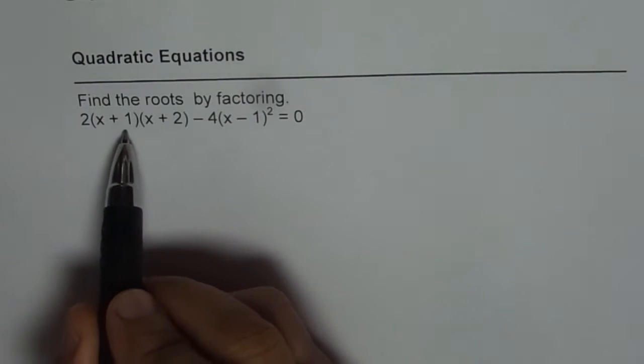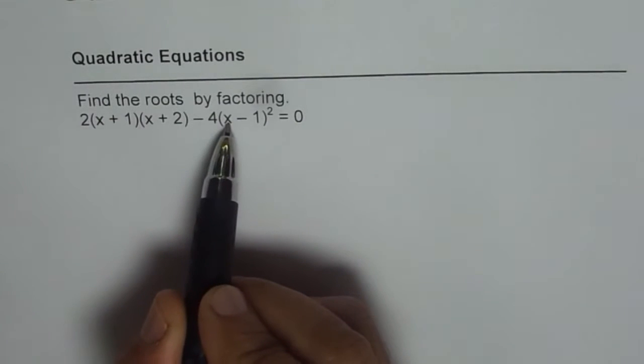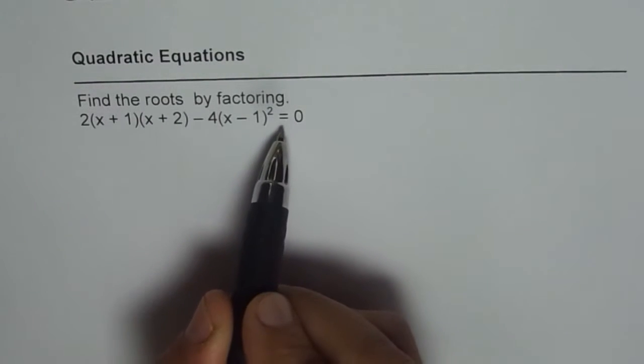The equation is 2(x + 1)(x + 2) - 4(x - 1)² = 0.